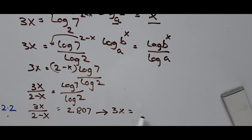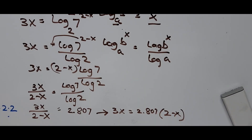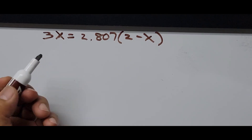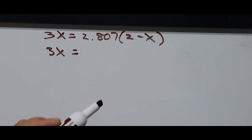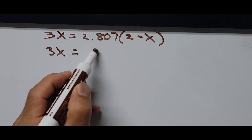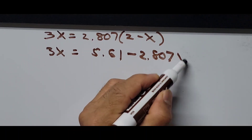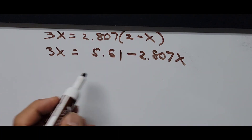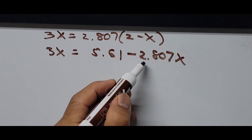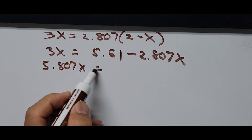Cross multiplying gives 3x equals 2.807 multiplied by (2 minus x). Distributing: 3x equals 5.614 minus 2.807x. Transposing all x terms to the left: 3x plus 2.807x gives 5.807x equals 5.614.